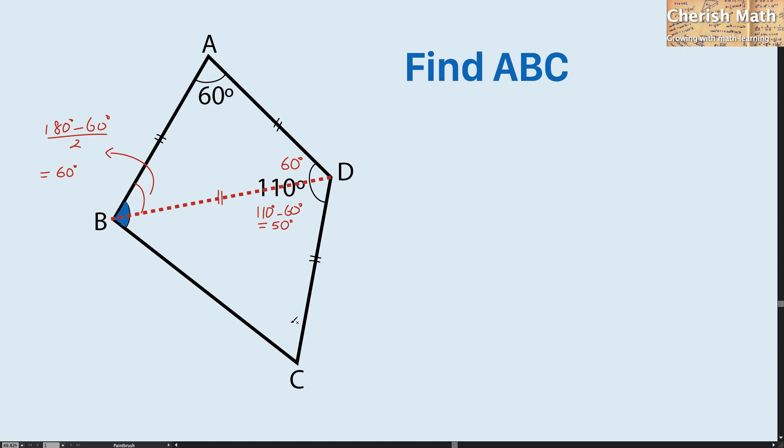Now I'm going to use triangle BDC, which is an isosceles triangle. For angle C, we use 180 degrees, take away the 50 degrees, and divide by 2.